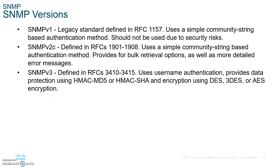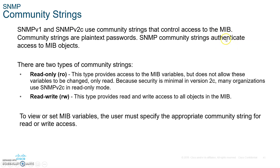Regarding SNMP versions: SNMP version 3 uses a username for authentication, provides data protection using HMAC-MD5 or HMAC-SHA, and uses encryption via DES, Triple-DES, or AES. SNMP version 1 and version 2c use community strings that control access to the MIB. Community strings are plain-text passwords. There are two types: read-only and read-write.